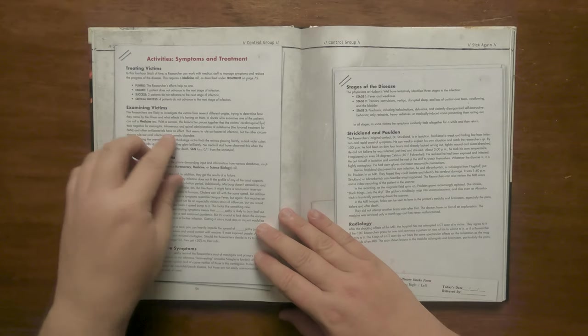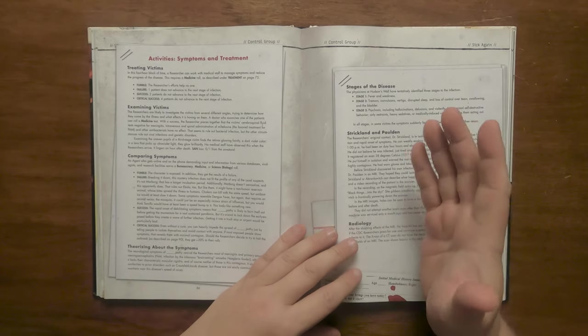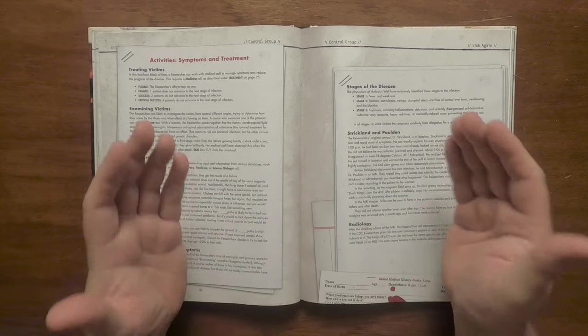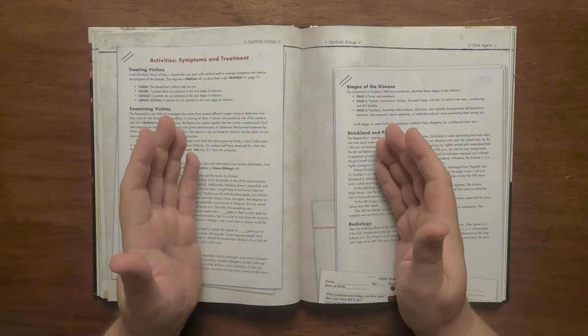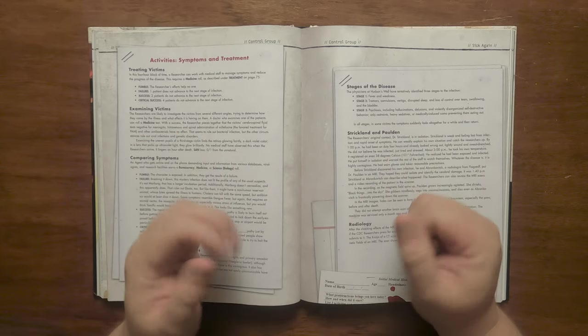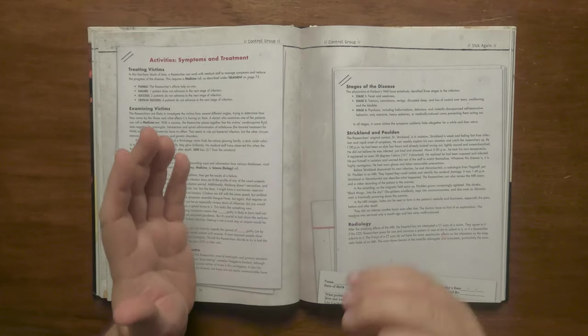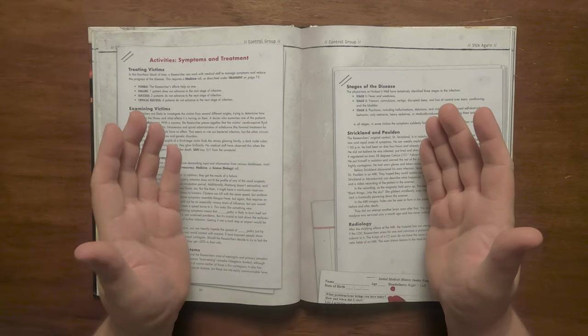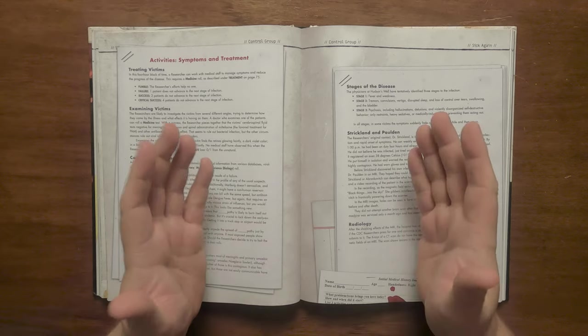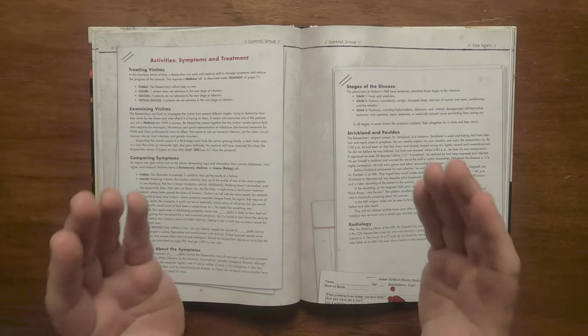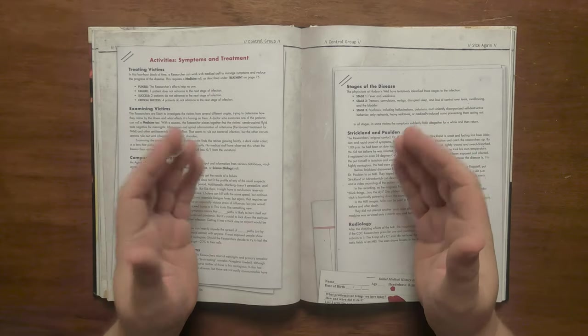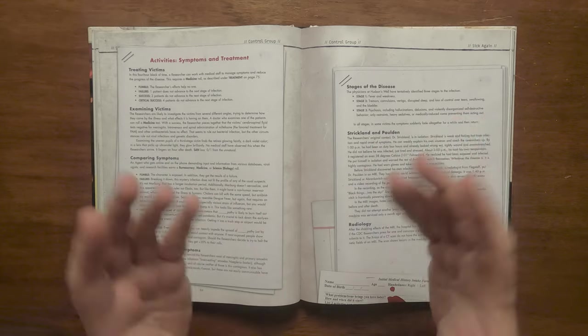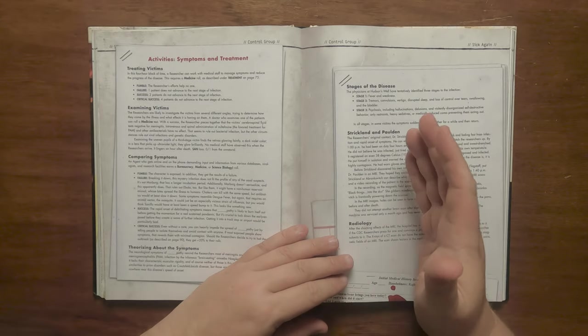The second activity that the researchers can do is in regard to symptoms and treatment. In one 4 hour block a researcher can work with medical staff to manage the symptoms and stall the progress of the disease. A medicine role is needed with varying results from a fumble meaning no help and a critical being that 4 patients stay at the same stage of infection. They can examine the victims to determine what the infection stems from and can easily rule out bacterial infections. If they can examine a stage 3 victim then they will find that their retinas glow a dark violet colour under ultraviolet light and it lingers for around an hour after death. This can cause a minor sand hit. They can compare symptoms on various databases which requires a variety of roles and has a number of results from a fumble meaning that they get exposed to the disease to a critical meaning that they work out that they can impede the spread by isolation. They can theorise about the symptoms and can come to the conclusion that it reminds them of meningitis and primary amoebic meningoencephalitis and has similarities to Kreutzfeld-Jakob disease though these are nowhere near as easily spreadable. The doctors at Hudson's Well have identified the three stages as laid out here.